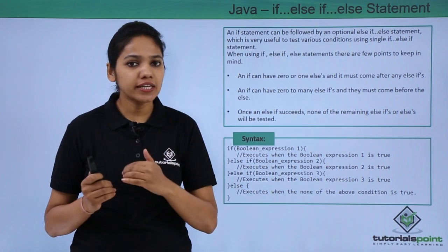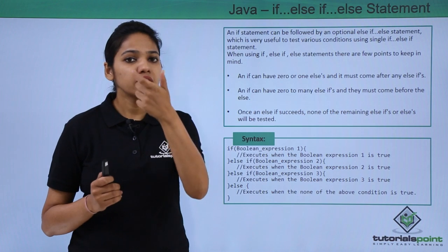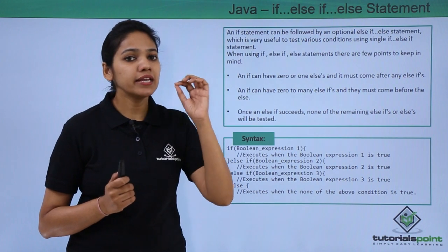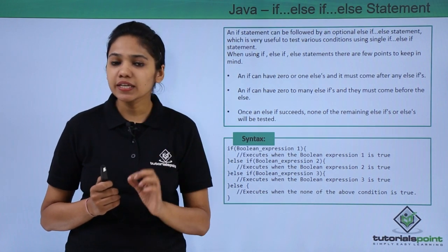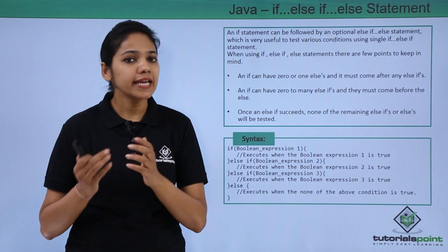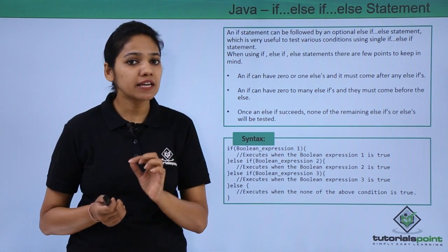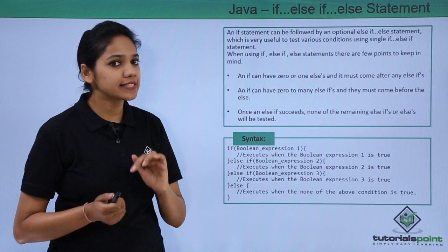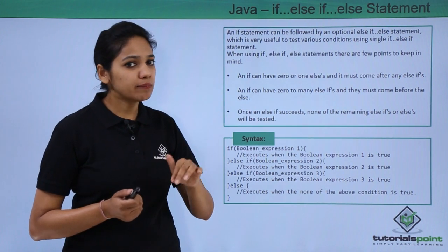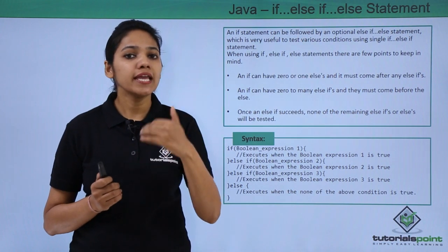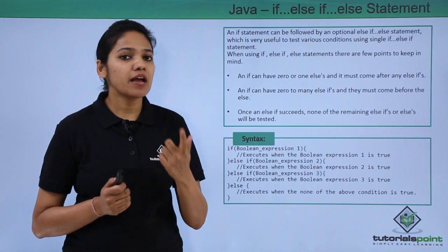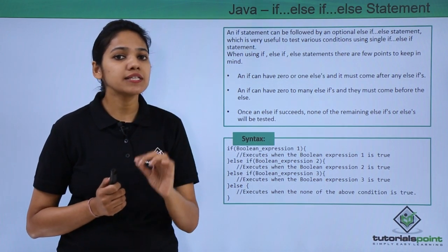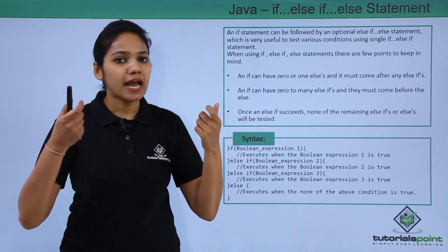We write the if keyword, then the block of statements, then else. The else-if will be written between if and else. Every if statement can have zero or more else statements, but the else statement comes last, following all the else-if statements. An if statement can also have zero or more else-if statements — you can provide as many as you want, but all else-if statements must be written between the if and the else.